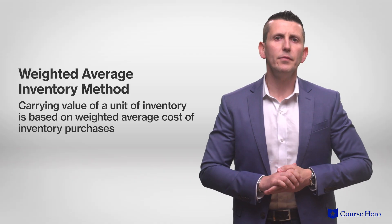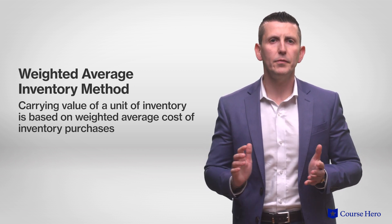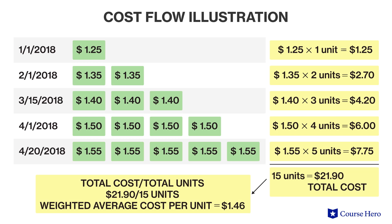Under the weighted average inventory method, the carrying value of a unit of inventory is based on the weighted average cost of inventory purchases. This simplifies the flow of costs by averaging the cost of the units and determining an average cost used to calculate both cost of goods sold and ending inventory. In this case, the total cost of inventory is $21.90, divided by the total count of inventory, which is 15 units, giving a weighted average cost per unit of $1.46. Each time the company sells a unit, it will add $1.46 to cost of goods sold.